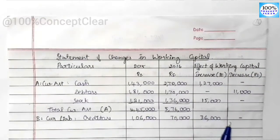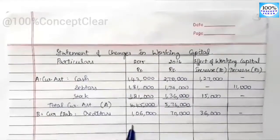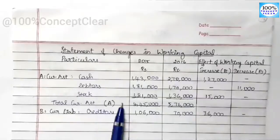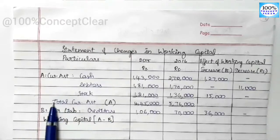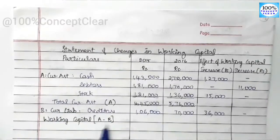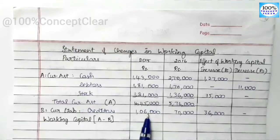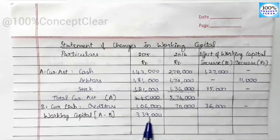Now we calculate the working capital, which is current assets minus current liabilities (A minus B). For 2015: 4,45,000 minus 1,60,000 equals 3,39,000. For 2016: total current assets are 5,76,000 and total creditors are 70,000. So 5,76,000 minus 70,000 equals 5,06,000.